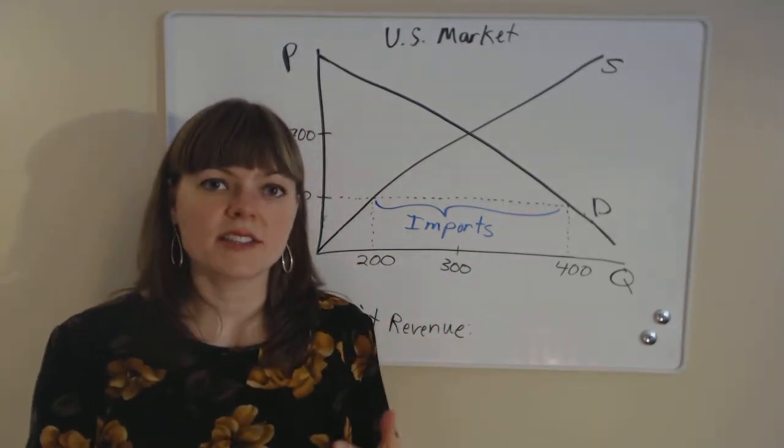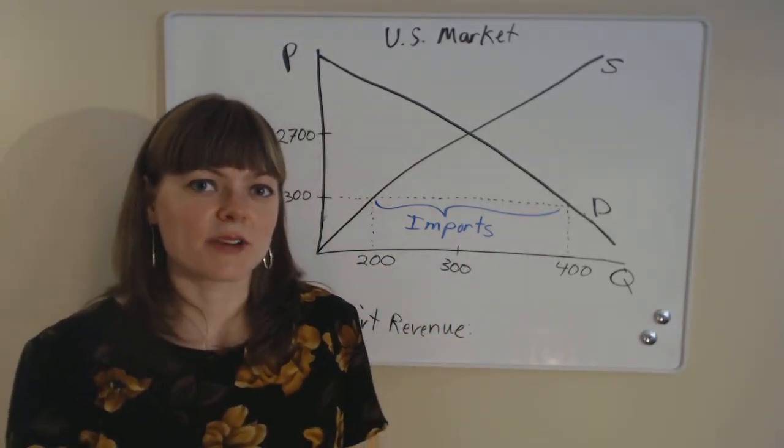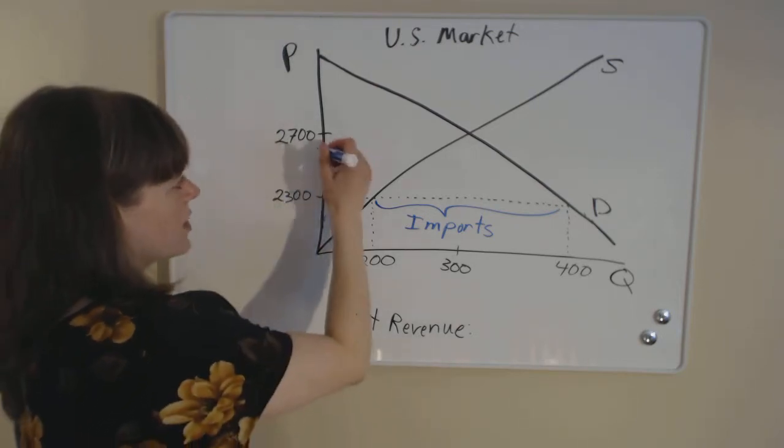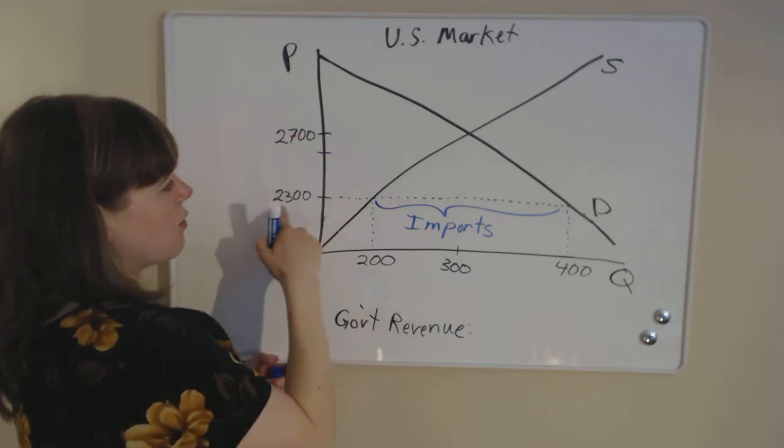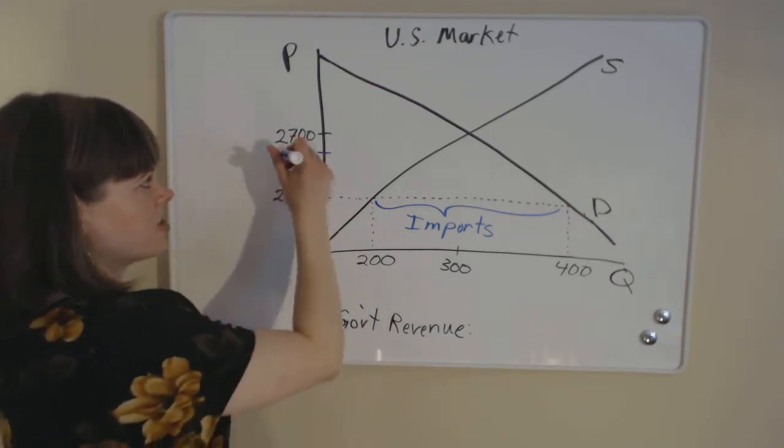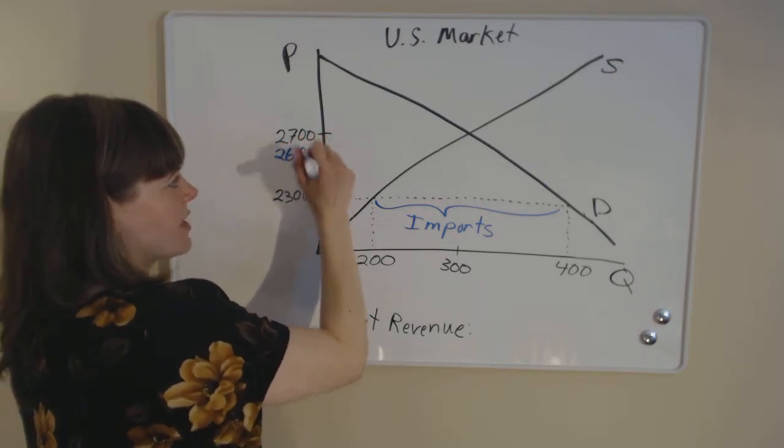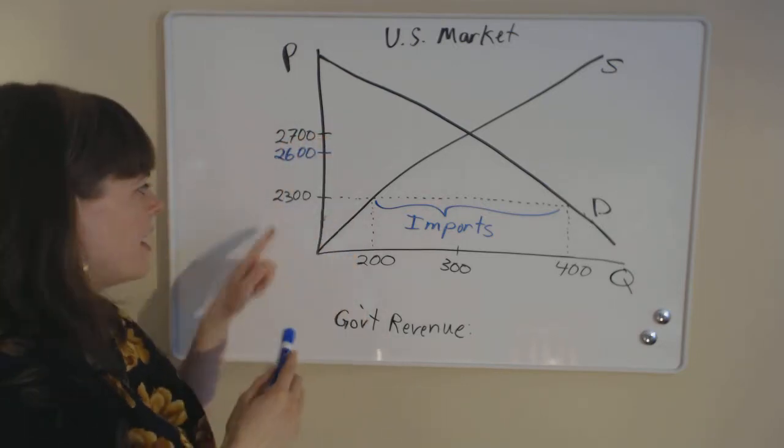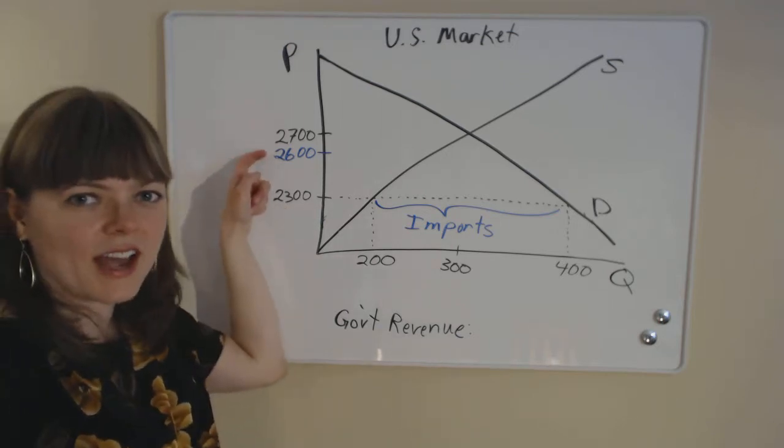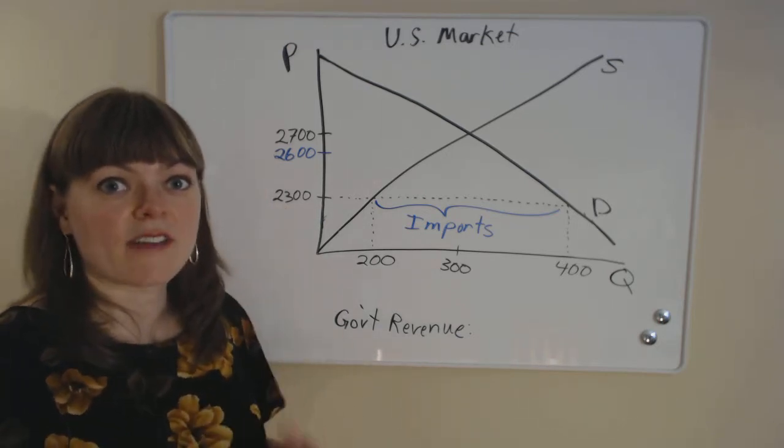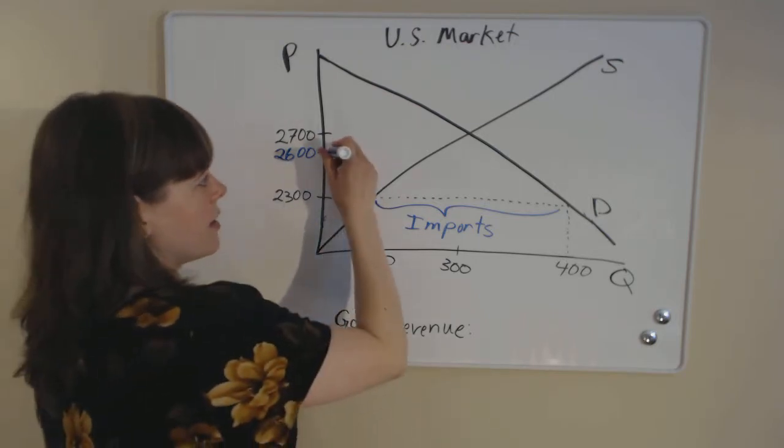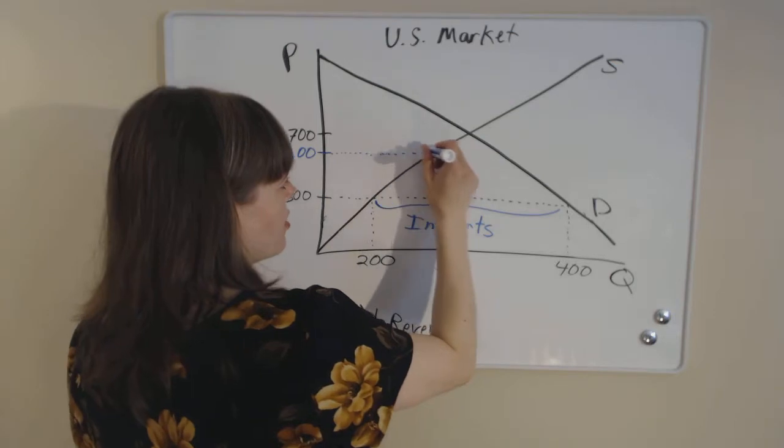The second question asks, what happens when the U.S. government places a $300 tax on engines? So let's put this on the market. Now, the essential price of an imported engine is going to be $2,600. It's going to be the international market price of $2,300 plus the $300 tax that U.S. consumers have to pay if they're going to buy internationally. So that puts the new price at $2,600.